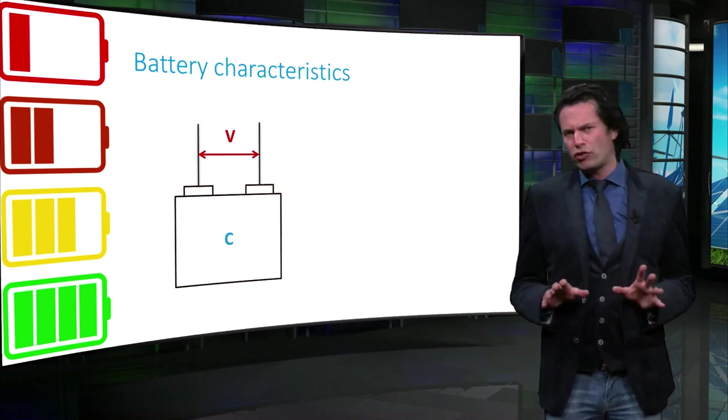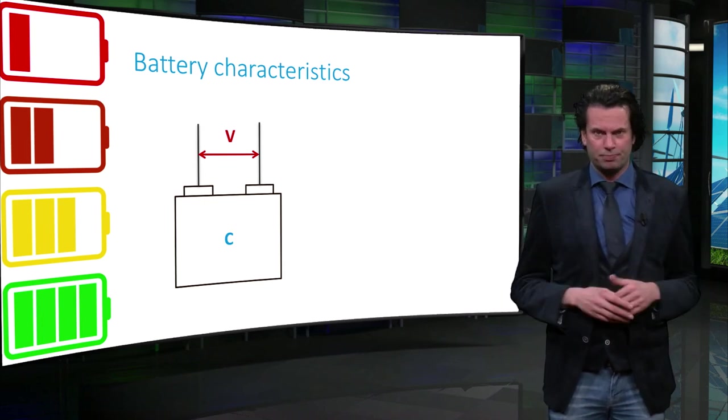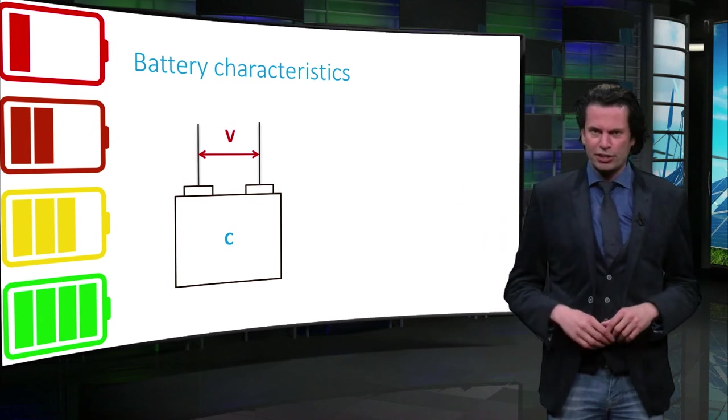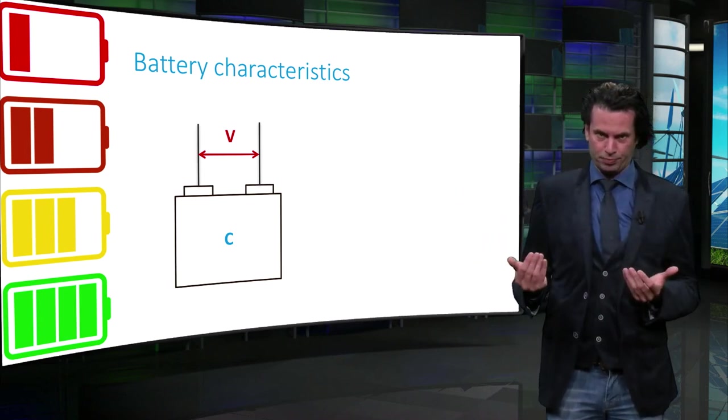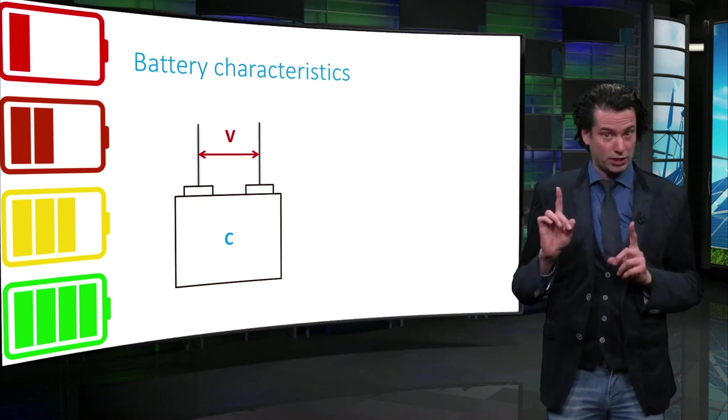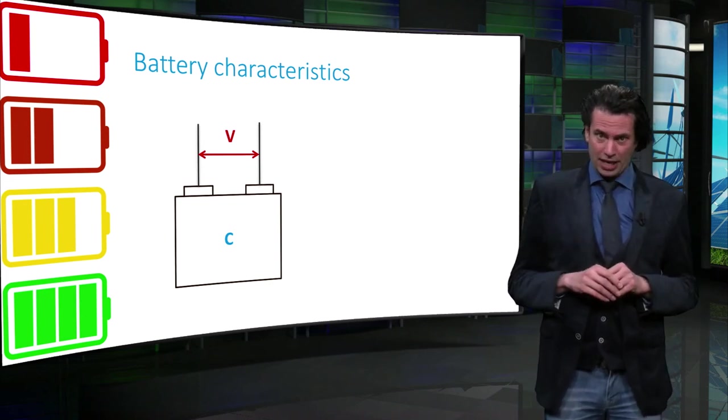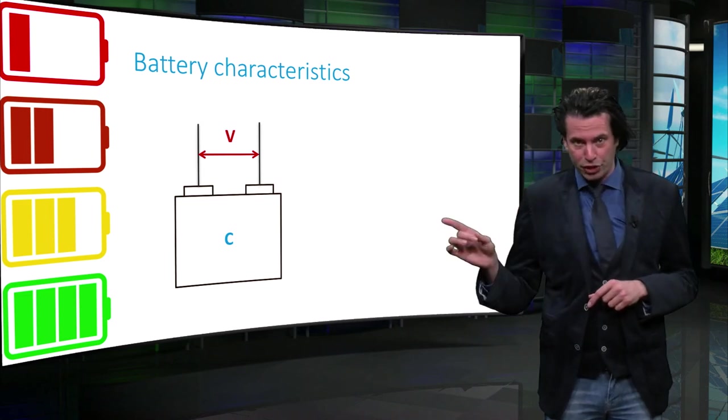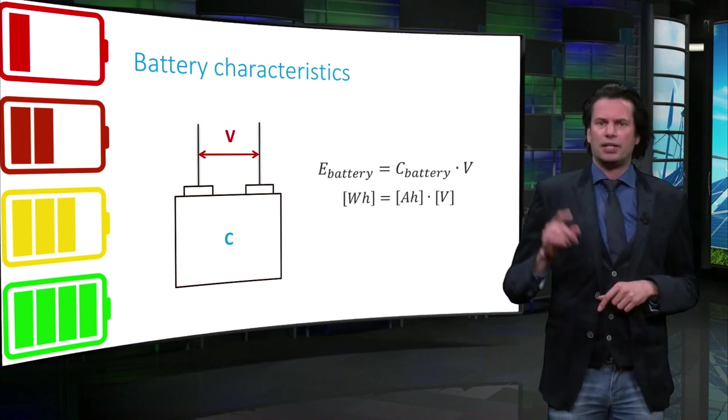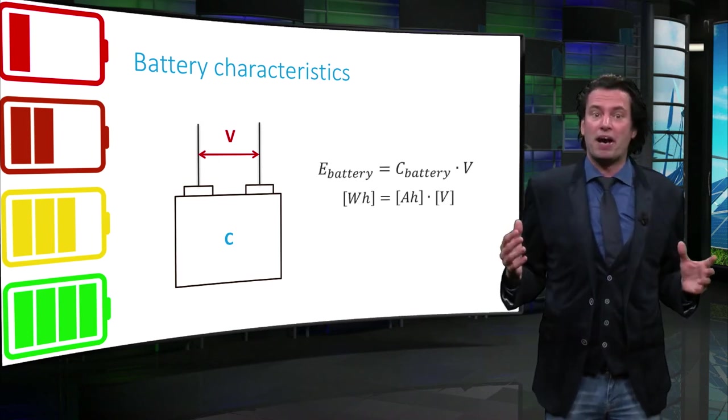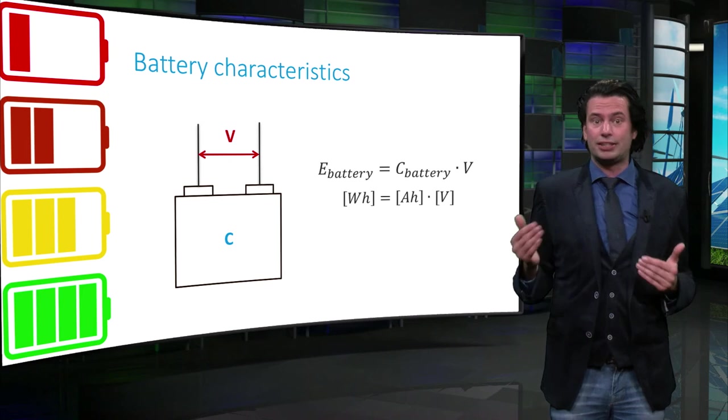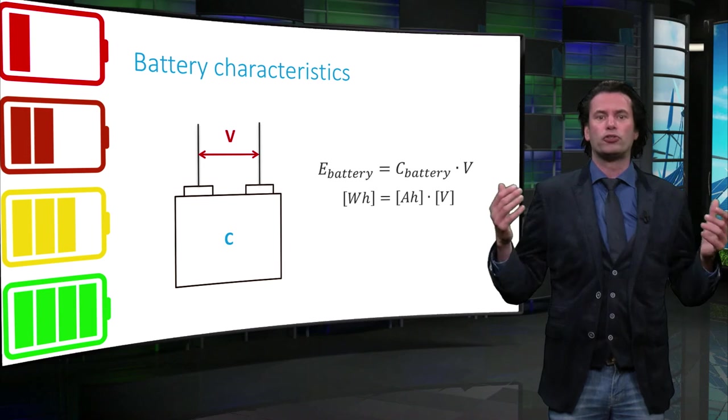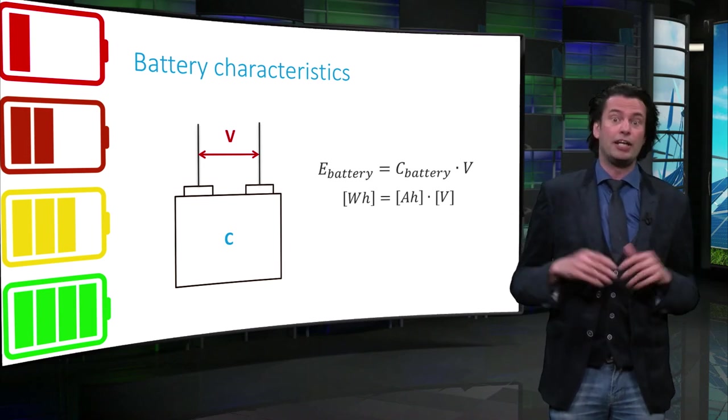We must not confuse the battery capacity with the energy capacity. The energy capacity of a battery, or any storage device for that matter, is the total amount of energy that the device can store. This is usually measured in watt-hours. How do we calculate the energy capacity of the battery, knowing the voltage and the battery capacity? The energy capacity is nothing but the battery capacity in amp-hours C multiplied by the rated battery voltage in volts, giving the total battery energy capacity in watt-hours.